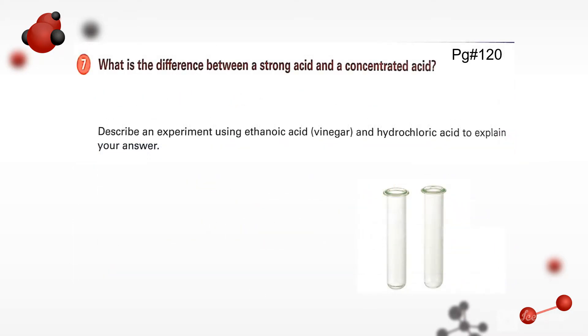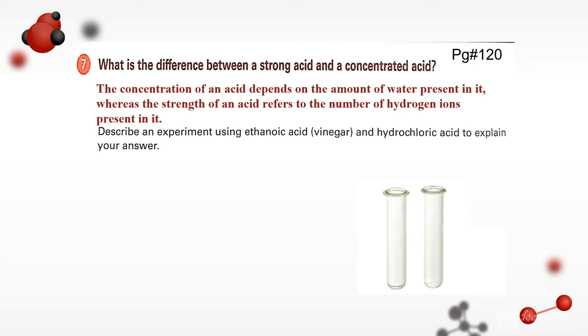Come to the seventh question. What is the difference between a strong acid and a concentrated acid? This is a very good question. So there is a minor difference between strong acid and concentrated acid. A concentrated acid is the acid that depends upon the amount of water present in a solution. So concentration means less quantity of water, the more concentrated the acid is, and more quantity of water, the less concentrated the acid is. Whereas the strength of an acid depends upon the number of hydrogen ions present in it.